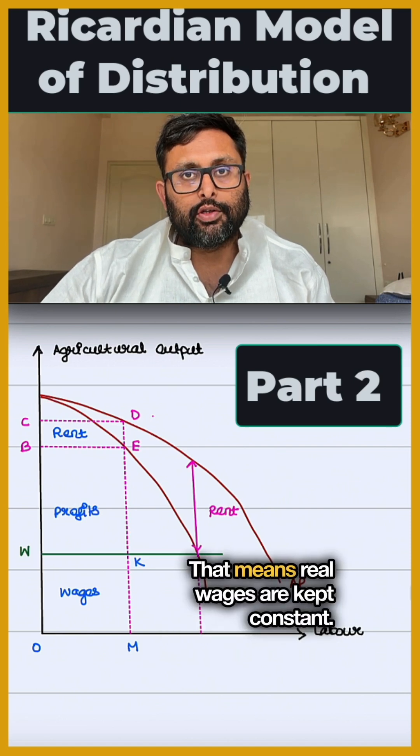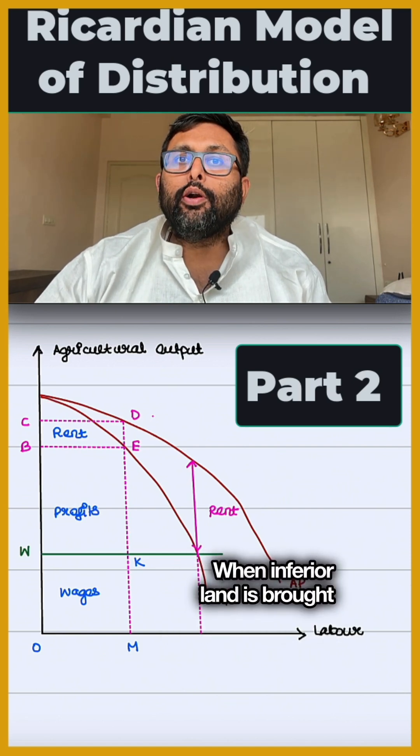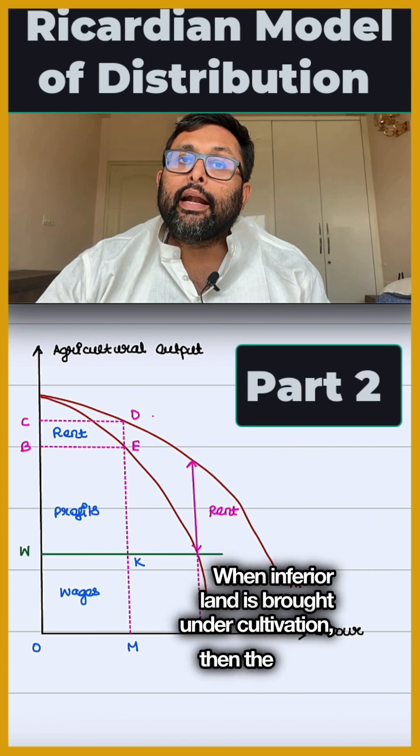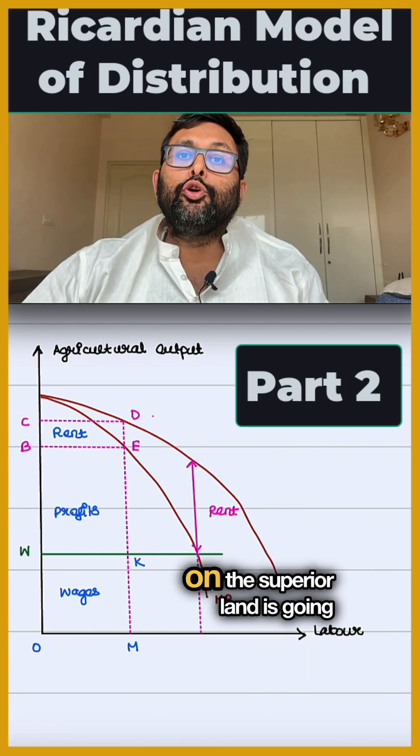That means real wages are kept constant. When inferior land is brought under cultivation, the rent on superior land is going to increase.